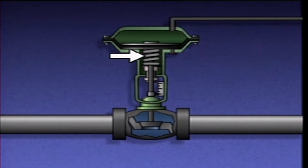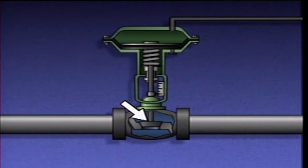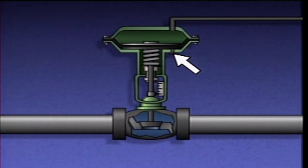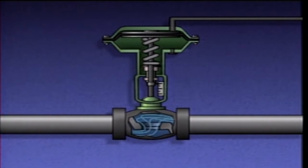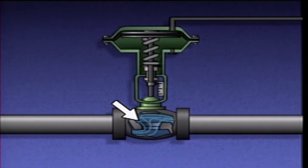The spring is compressed and the valve closes. Air in the lower chamber is exhausted through the air vent. When air pressure to the upper chamber is reduced, the spring moves the actuator's stem upward and the valve opens.